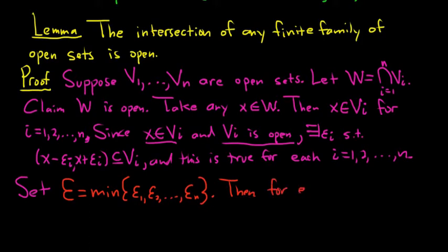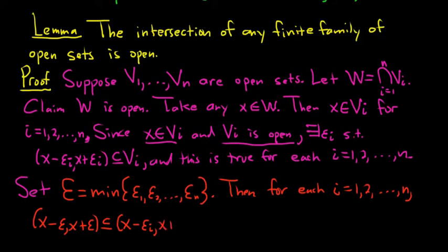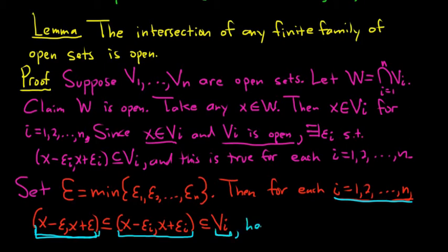Then, for each i, so 1, 2, all the way to n, x minus epsilon, x plus epsilon, this set is contained in all of these other ones. It's contained in each one of these. And each one of these is contained in V sub i. So for each i, this set, this epsilon neighborhood, is contained in this set, which is contained in V sub i. So for each i, our epsilon neighborhood is contained in V sub i. Hence, our epsilon neighborhood is contained in the intersection of the V sub i's. It's contained in each one, so it's therefore contained in the intersection, which is what we said was W.